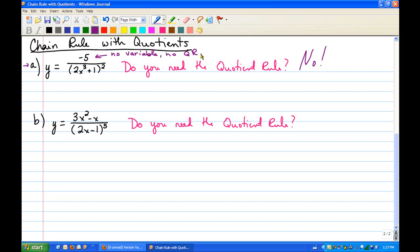So instead, what we're going to do is rewrite the problem as y equals negative 5 times 2x cubed plus 1 to the negative 2, and then just take the derivative using the chain rule. We don't need the product rule here either, because that negative 5 doesn't have an x in it. So we're just going to commence with the chain rule.